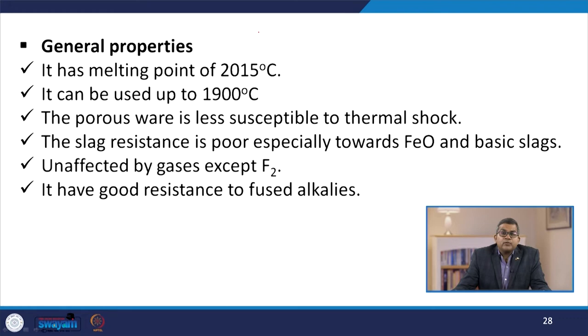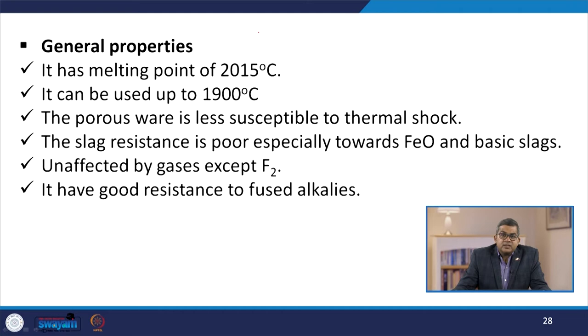The general properties of alumina include a melting point of 2015°C and usable up to 1900°C. The material is less susceptible to thermal shock. Slag resistance is poor especially towards FeO and basic slag; it is unaffected by gases except F2 and has good resistance towards fused alkalis.